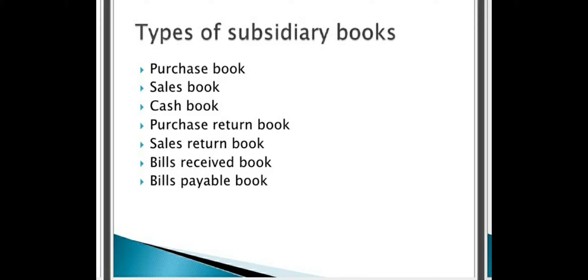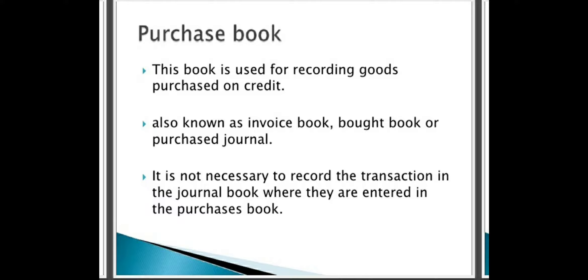The first one is purchase book. In every organization, we purchase something they require — for example, a manufacturing concern may require raw material, and trading businesses may require goods. Whenever any organization purchases goods on the basis of credit, all those transactions will be recorded in the purchase book only. This book is used for recording goods purchased on the basis of credit. Business concerns may purchase goods on cash basis or on credit, but in this purchase book, only the credit purchases are recorded.